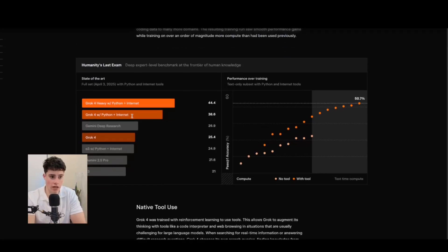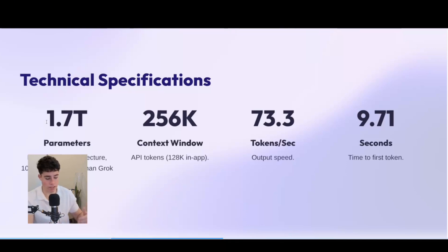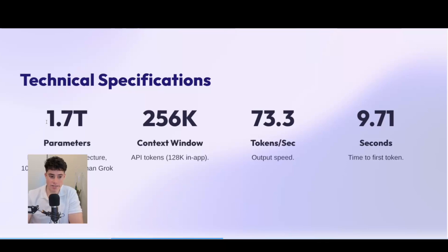On Grok's website, we can see it performed extremely well — it is the first AI model to score over 50% on Humanity's Last Exam. This proves the model is extremely efficient. It has over 1.7 trillion parameters, a 250,000 token context window, and an output speed of 73.3 tokens per second.